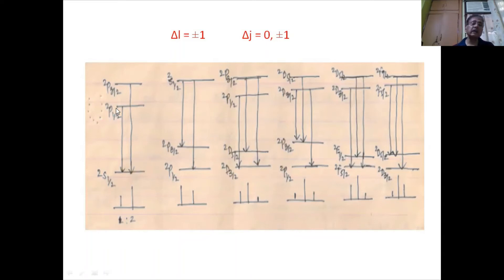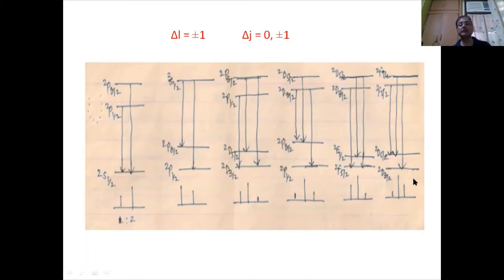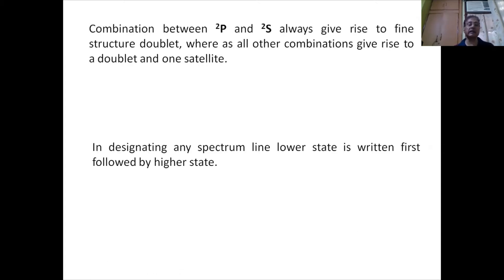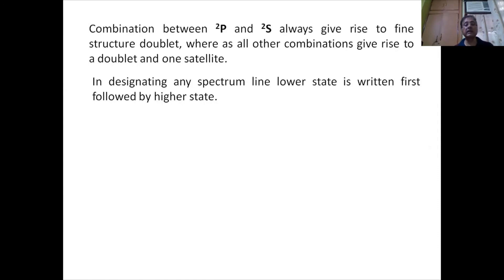In the P-S combination, we always get two lines. But in transitions involving P-D and D-F energy levels, we have three lines. Combination between doublet P and doublet S always gives rise to a fine structure doublet, whereas all other combinations give rise to a doublet and one satellite line. In designating any spectrum line, the lower state is written first followed by the higher state.